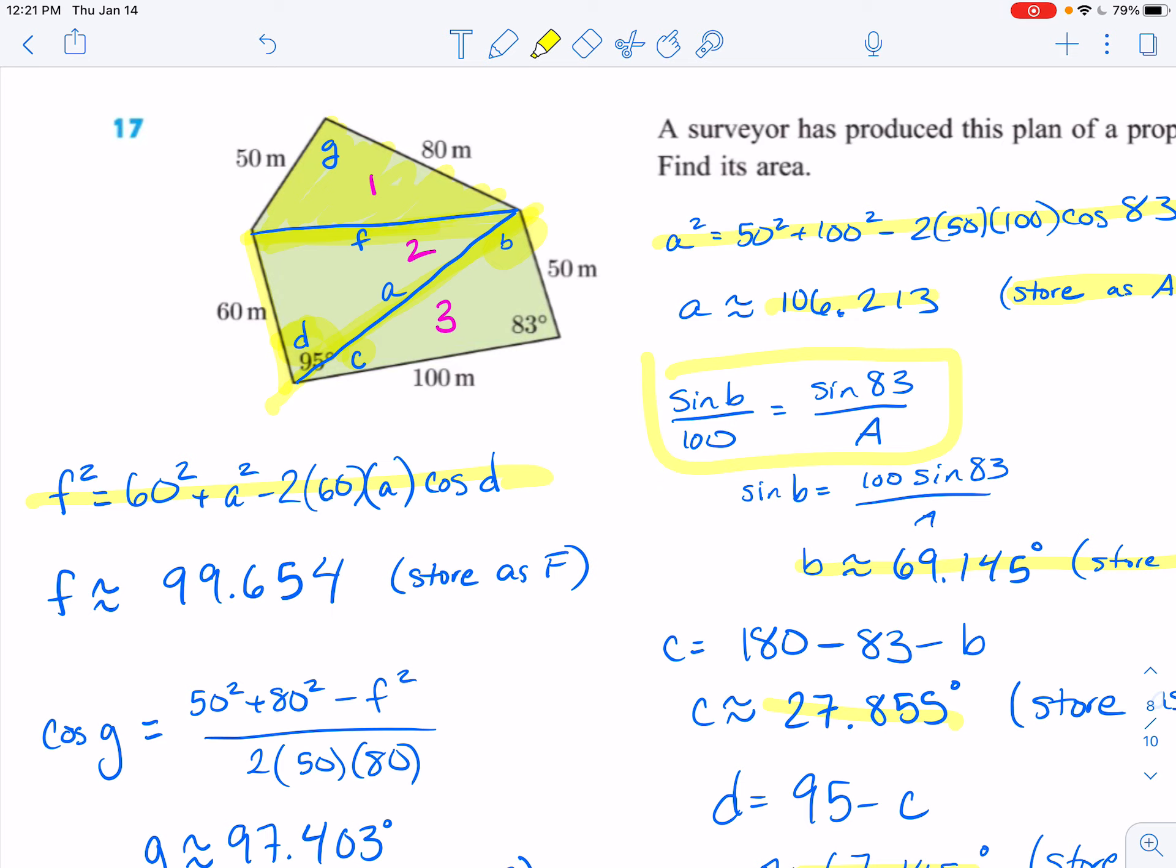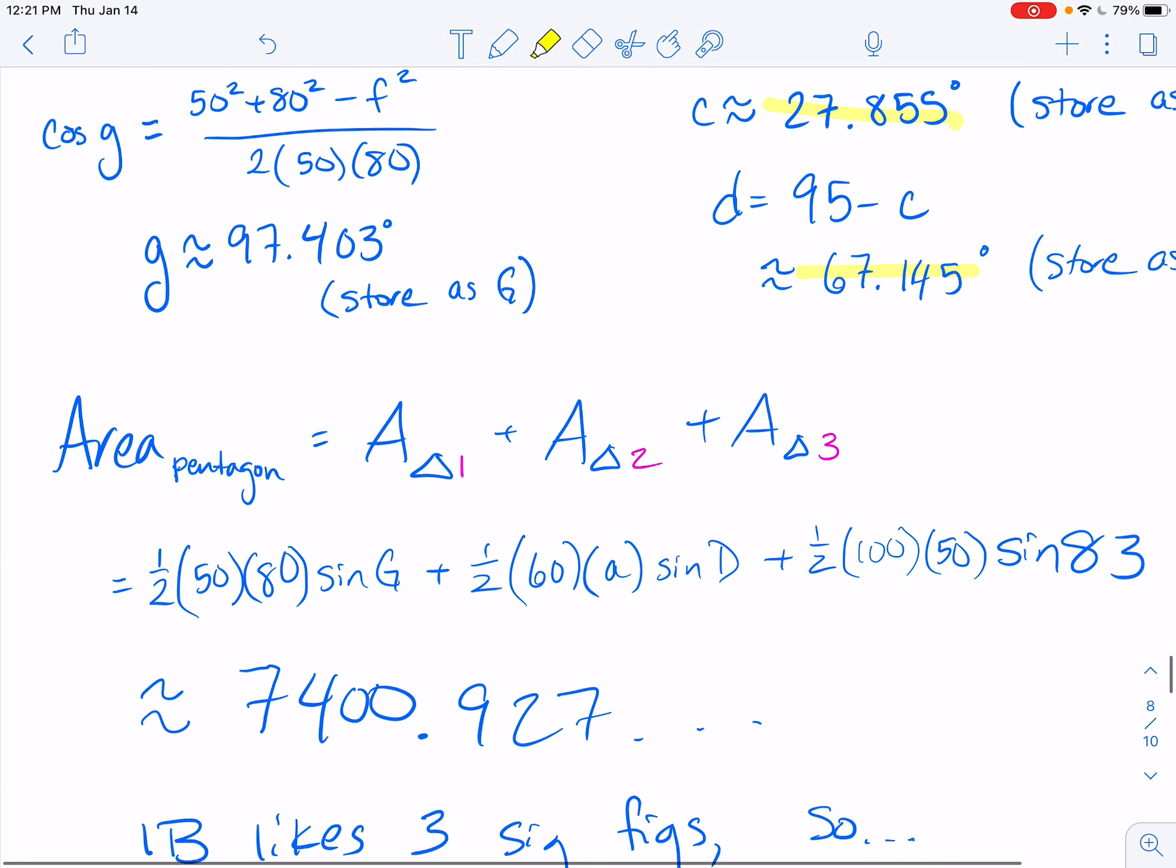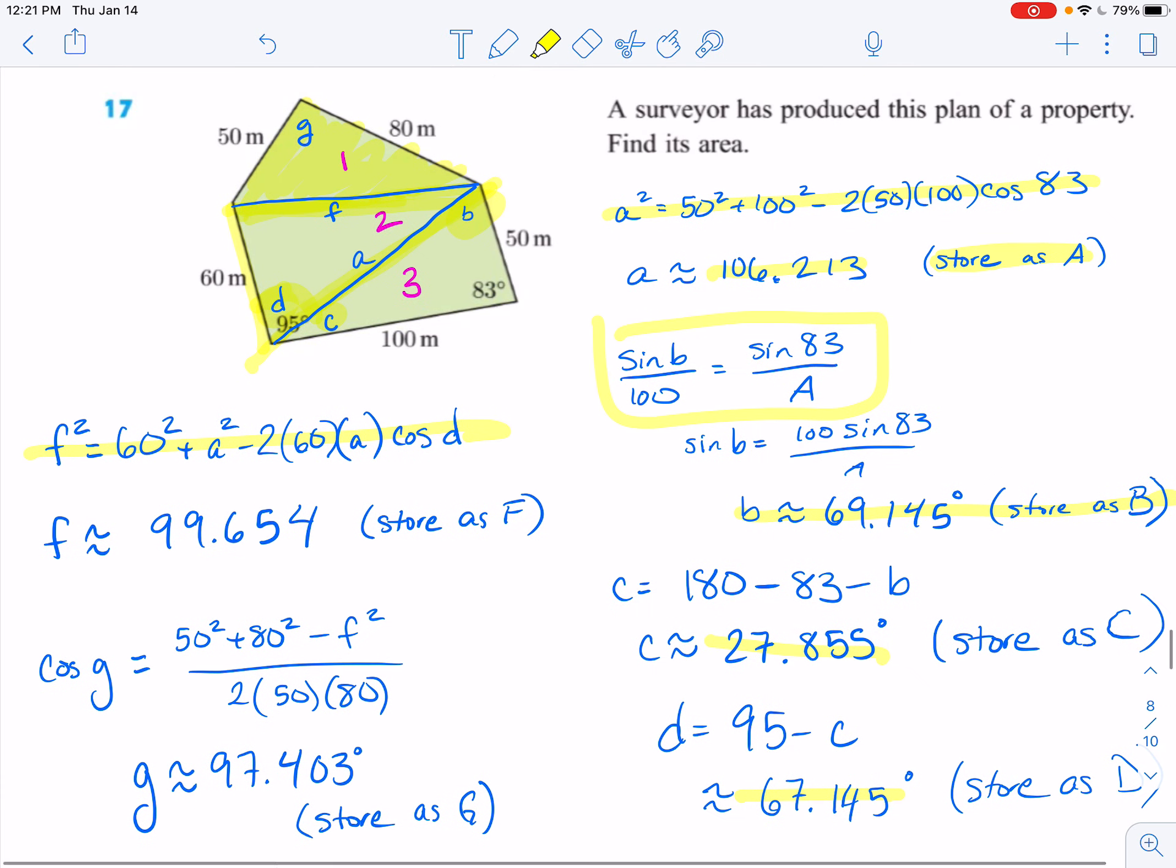And then once I found, since I knew F, I could then find angle G, and I stored that, and then I knew that the area of the pentagon, the whole thing was going to be equal to the area of triangle one plus two plus three.